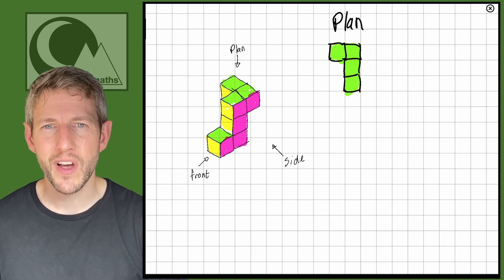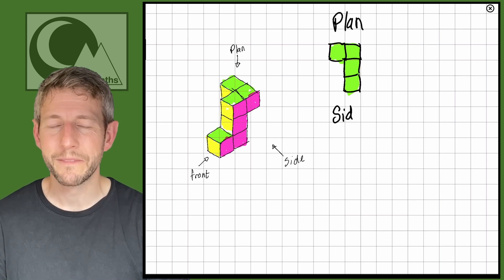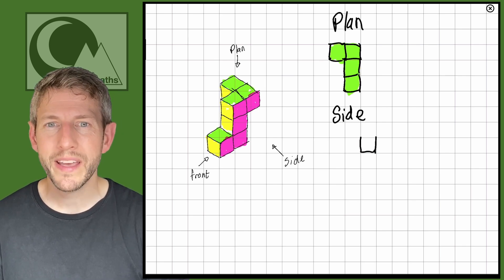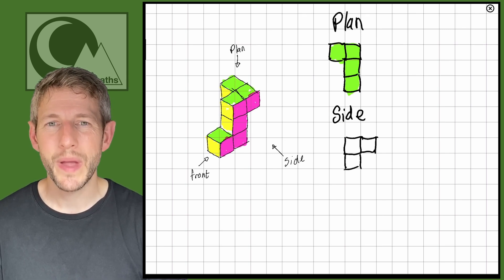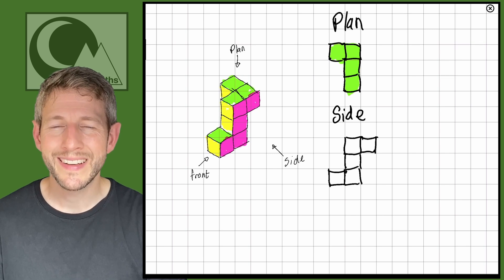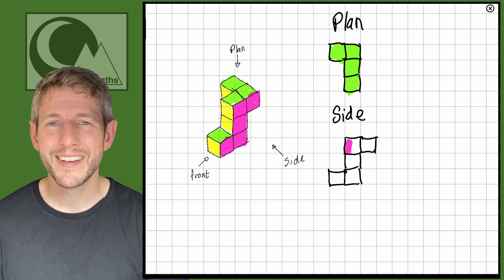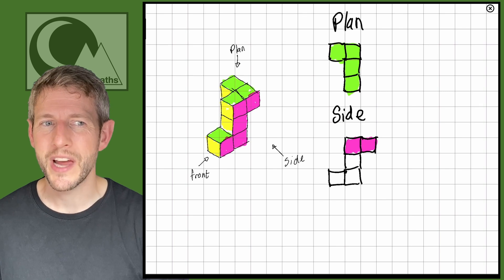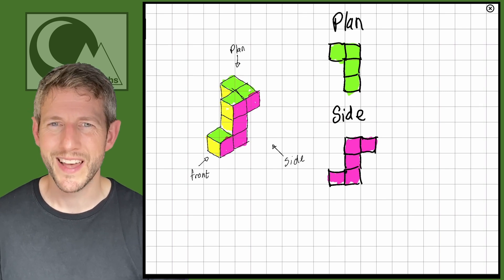Now let's look at the side view, working from top to bottom. From the far back square there is a square directly to the side of it, then a square below, another square below that, and then a square to the side of that. So we get a shape that looks a little bit like a Z or a backwards Z.